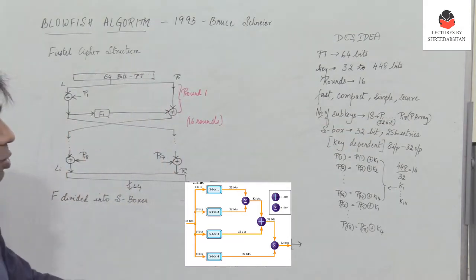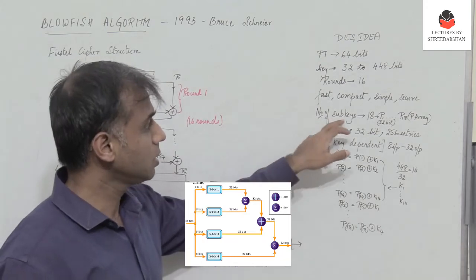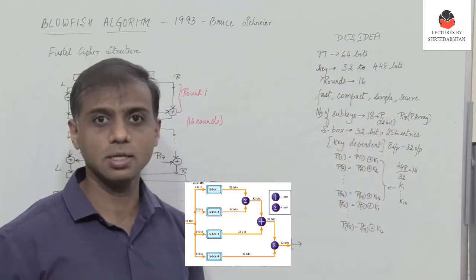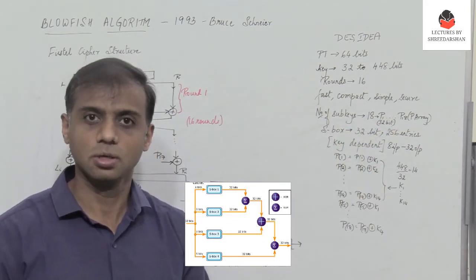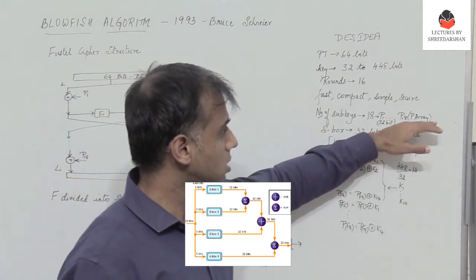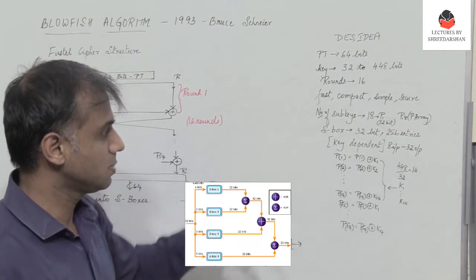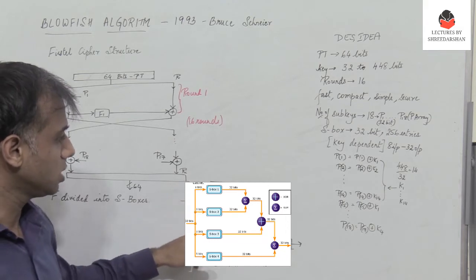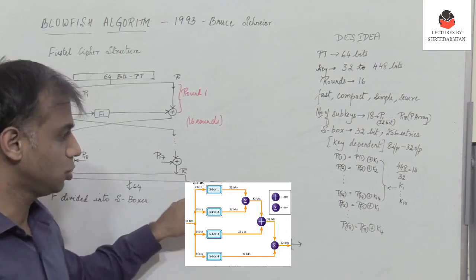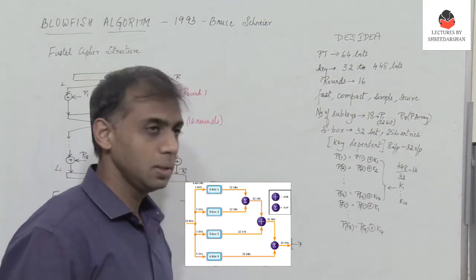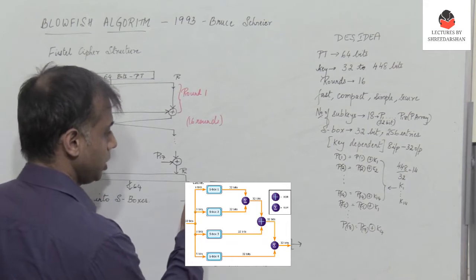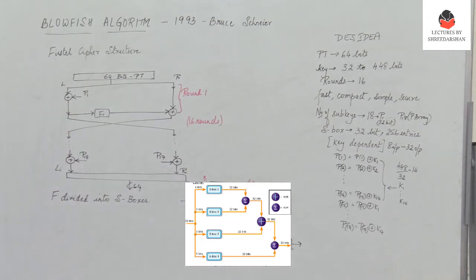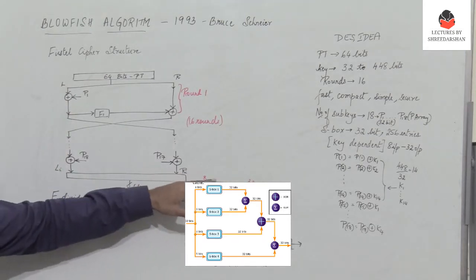The 18 subkeys P1 to P18 form the P-array — some textbooks also write this as P0 to P17. Regarding the S-boxes, there are four S-boxes: S-box 0, 1, 2, and 3, each of length 32 bits. Each S-box takes an input of 8 bits and produces an output of 32 bits, so there is an expansion within the S-box.